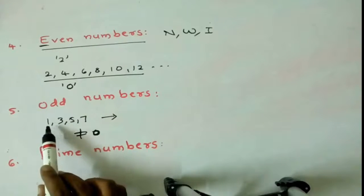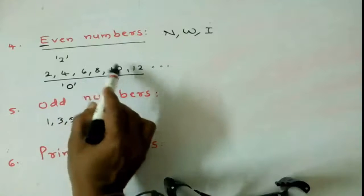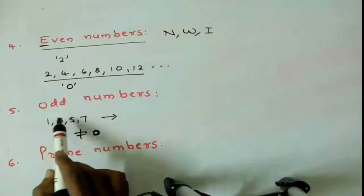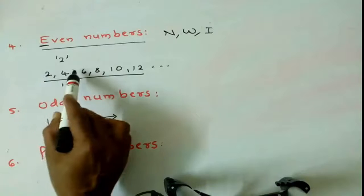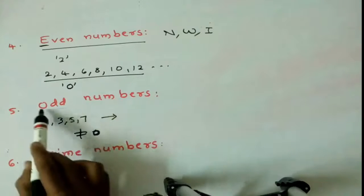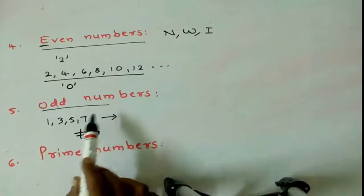In the natural numbers 1, 2, 3, 4, 5, like that. 2, 4, 6, 8 are even numbers. Remaining 1, 3, 5, those are all odd numbers. Even numbers, odd numbers.